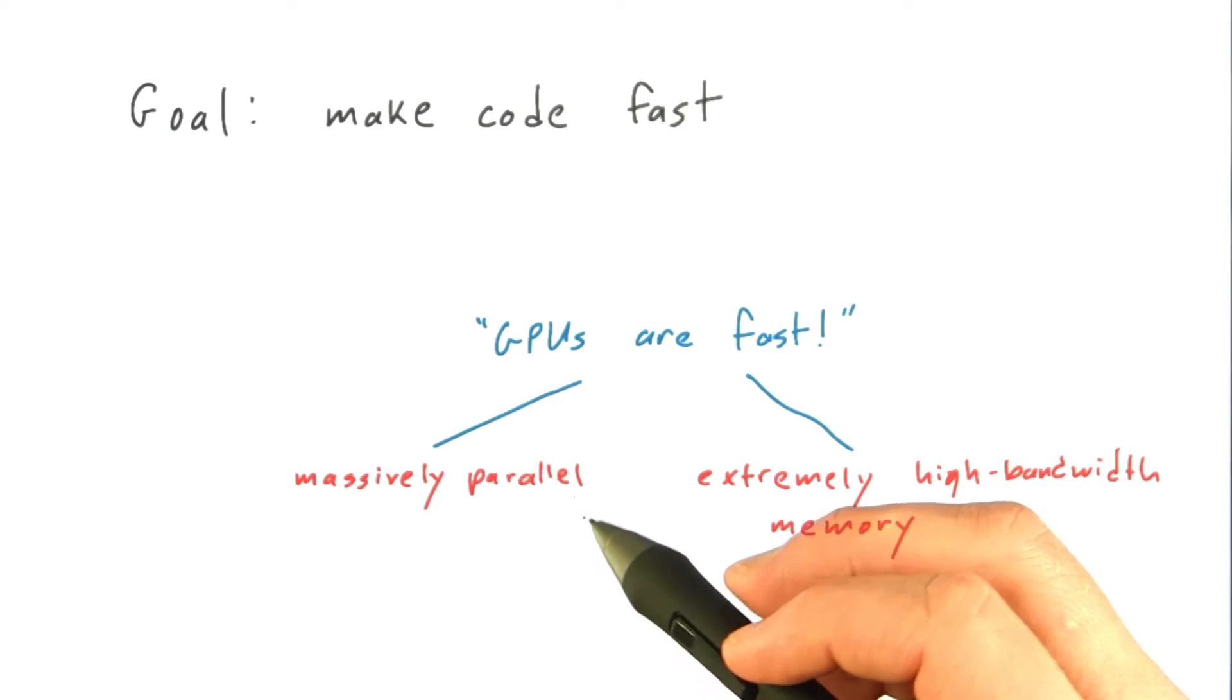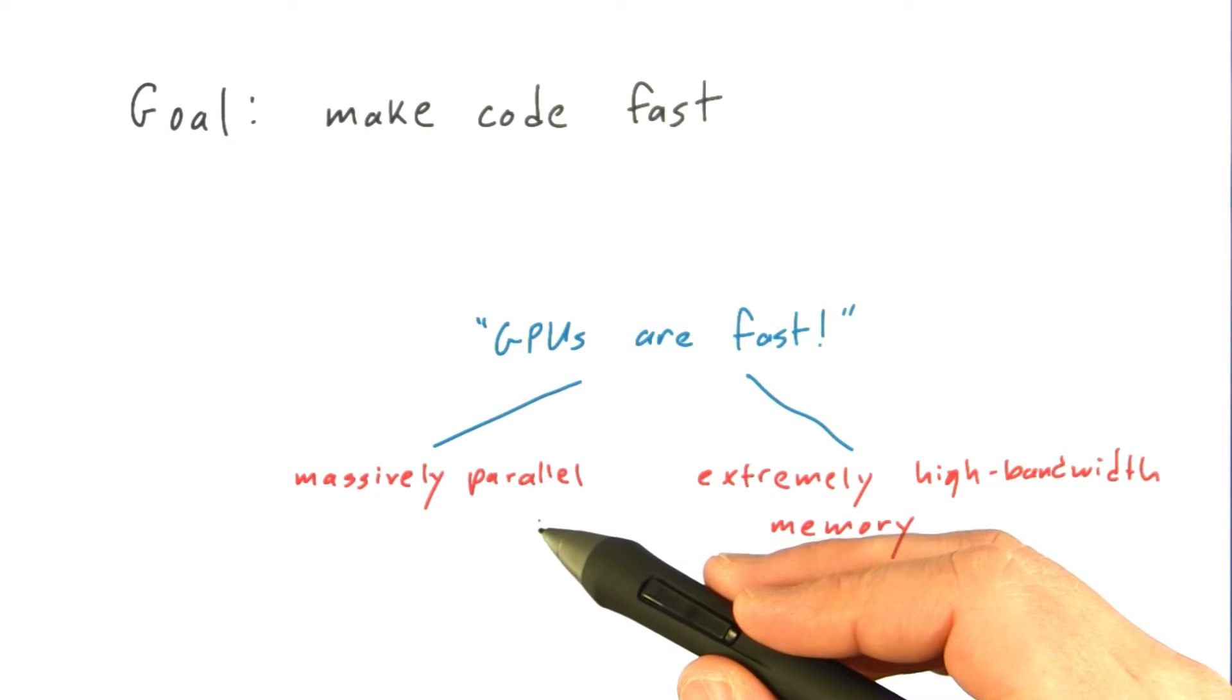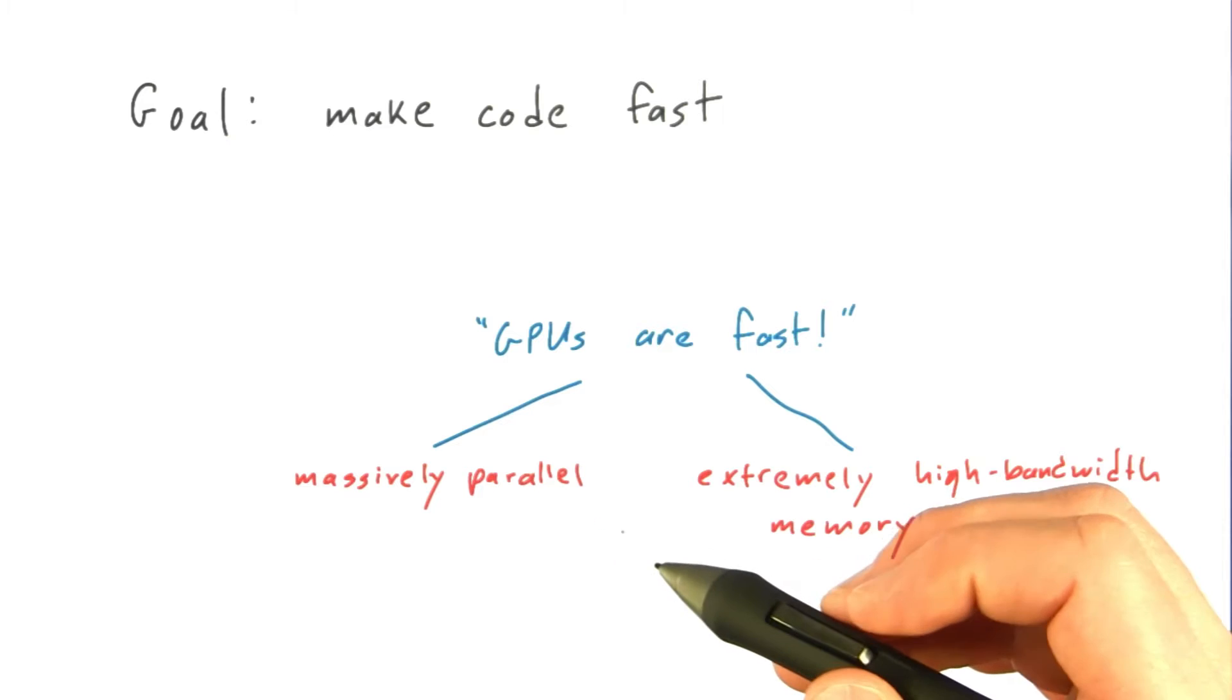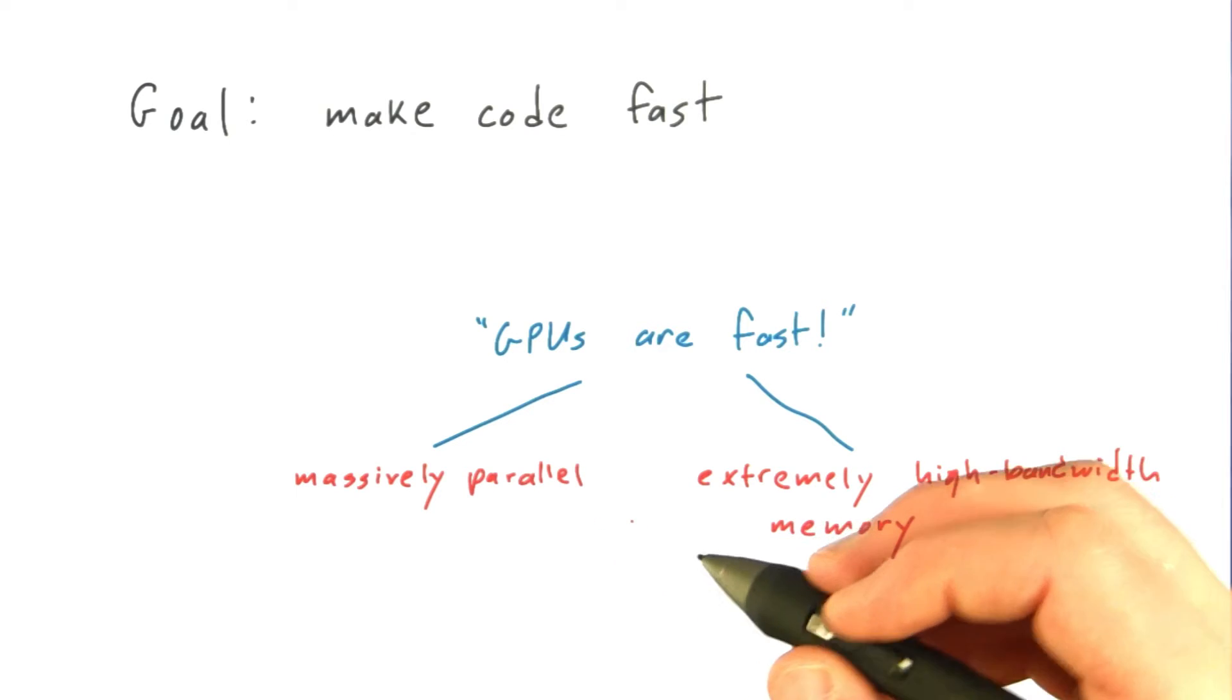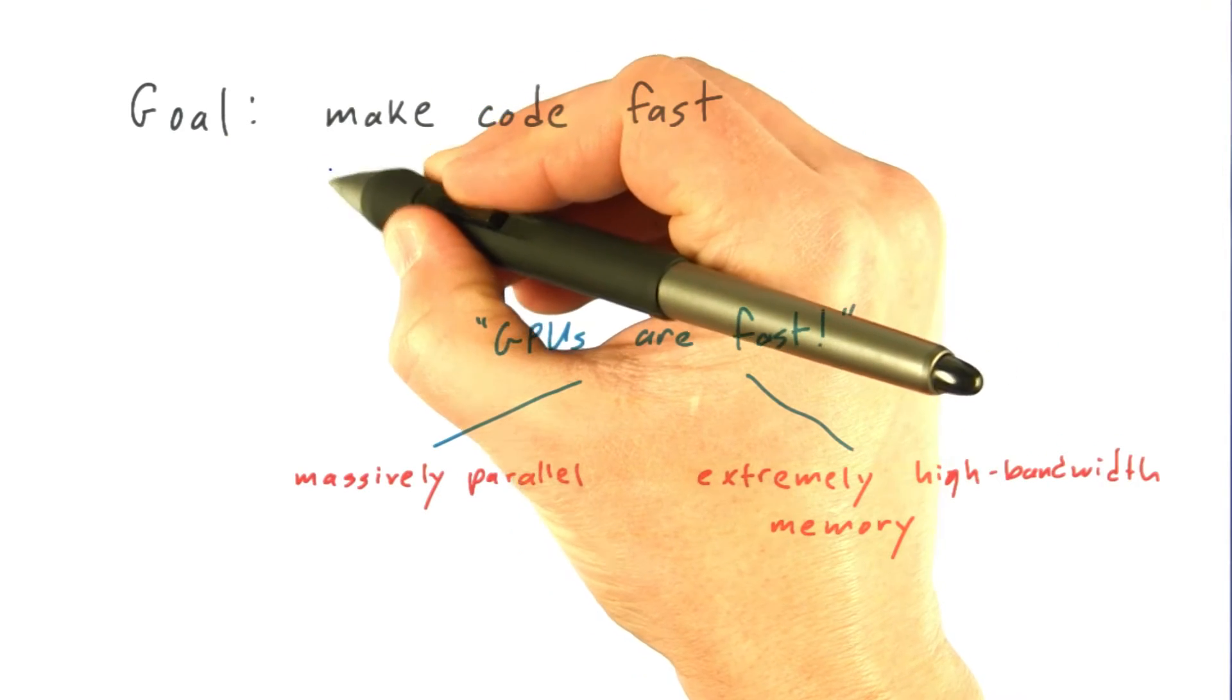Okay, so if the memory system can't deliver data to all of these processors and store results from all those processors, then we're not going to get the full speed out of our GPU. And that's why, on a memory-limited kernel like Transpose, our sub-goal is really to utilize all the available memory bandwidth.